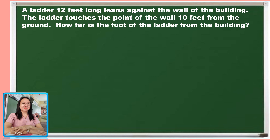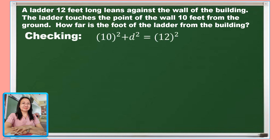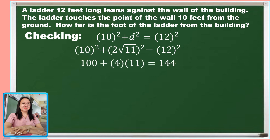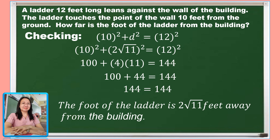For the checking, substituting 2 square root of 11 for D: 10 squared is 100, and the square of 2 square root of 11 is 4 times 11, which is 44, and 12 squared is 144. Adding 100 and 44 gives 144, which equals 144. Therefore, the foot of the ladder is 2 square root of 11 feet away from the building.